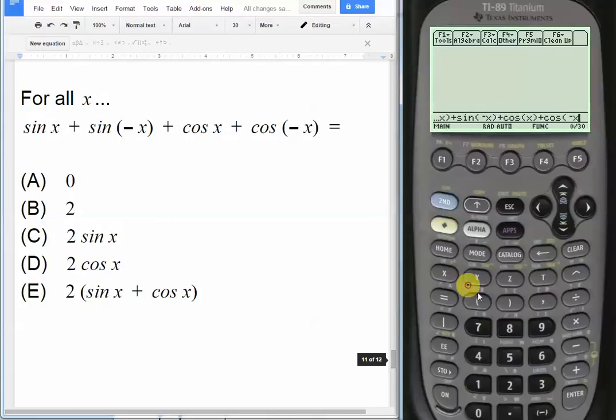Nothing fancy at all about this, push enter, simplifies to 2 cosine x, which is choice D.